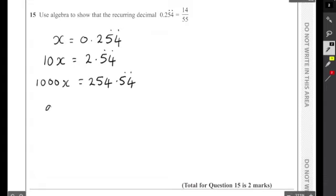Now 1000x take away 10x is going to mean the same thing as 254 take away 2, isn't it? Because those horrible endings are going to disappear if I do that.